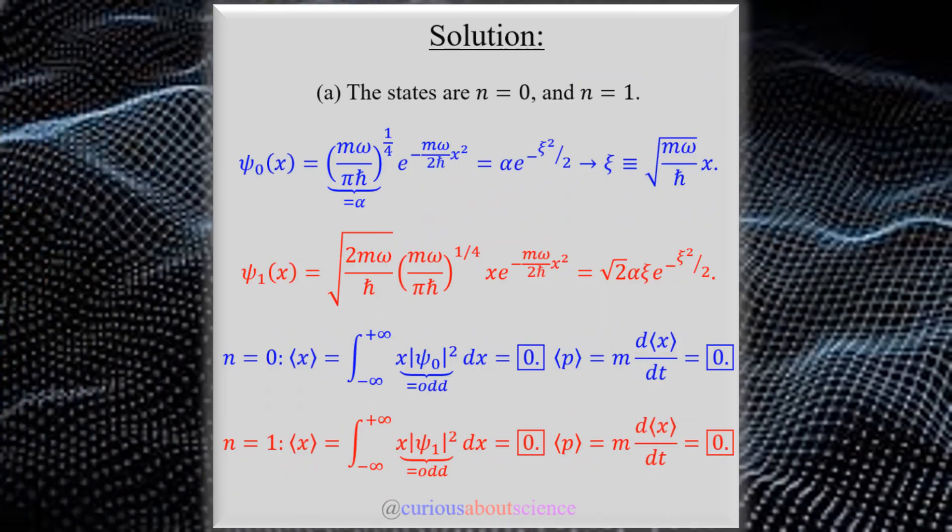For the states psi 0 and psi 1, we have n equals 0 and n equals 1, which will be denoted in blue and red, respectively, as we've seen here in the statement of the wave functions. So here we have psi 0, the ground state, and then psi 1, the first excited state. Along with the statement of the wave functions, we do have a couple substitutions that were suggested by the author to help the obnoxious writing required.